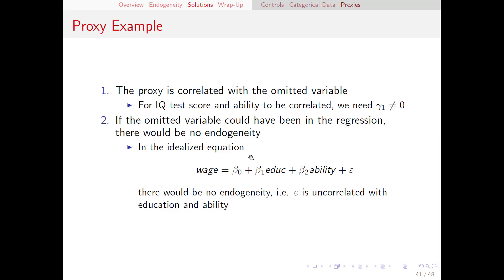Number two, if the omitted variable could have been in the regression, there would be no endogeneity. So this is saying that in the ideal situation where we would be able to actually find ability and put it in the regression, then we would have no endogeneity there. That is to say, in the equation that I've written here, with ability actually in the equation, epsilon is uncorrelated with education and ability.